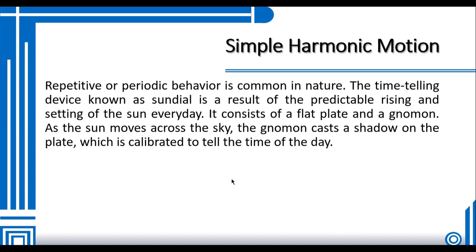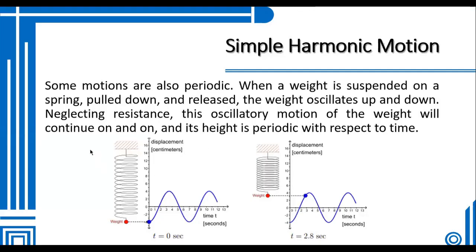Some motions are also periodic. When a weight is suspended on a spring, pulled down and released, the weight oscillates up and down. Neglecting resistance, this oscillatory motion of the weight will continue on and on, and its height is periodic with respect to time. These are examples of what we call simple harmonic motions.